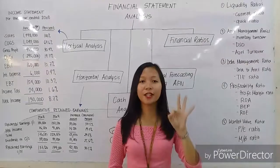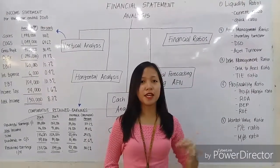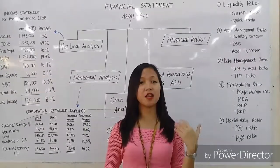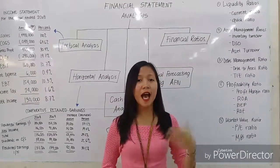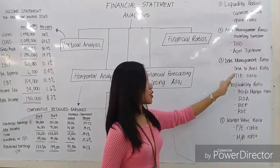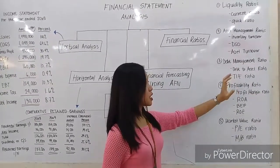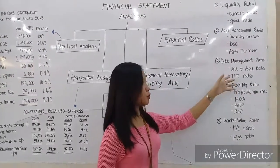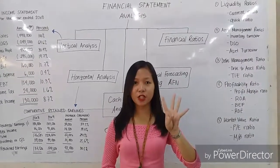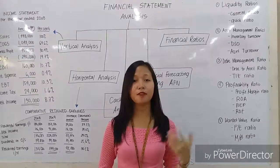The third category is the debt management ratio, which shows the ability of the firm to pay off its long-term debts as well as how it finances its assets. Ratios such as the debt to asset ratio and the times interest earned ratio belong to this category.